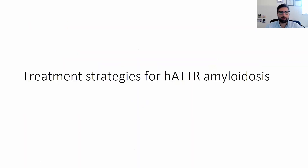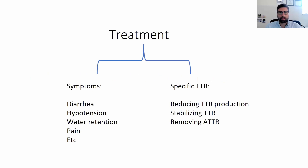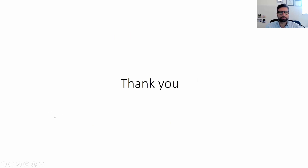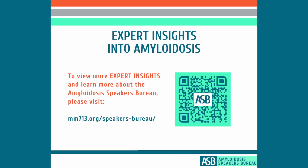Briefly, regarding treatment strategies for ATTR amyloidosis: there are now treatments that specifically target ATTR, which can decrease mortality, decrease morbidity, and even improve neuropathy and heart failure. It is very important to make this diagnosis because you can significantly improve your patient's lifespan and quality of life. We can also treat symptoms such as diarrhea, hypotension, and edema. Thank you very much for listening. I hope this raises awareness about amyloidosis and ATTR neuropathy.